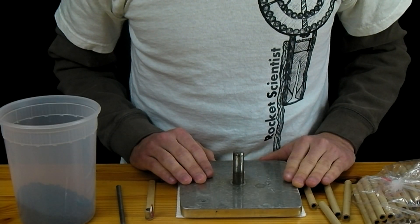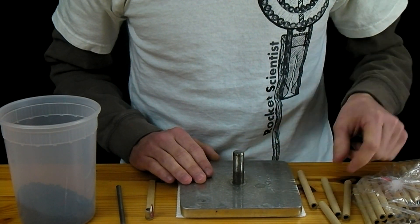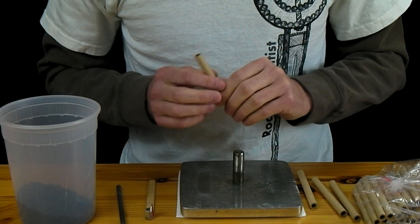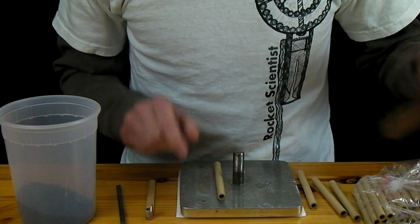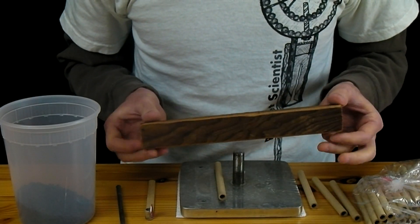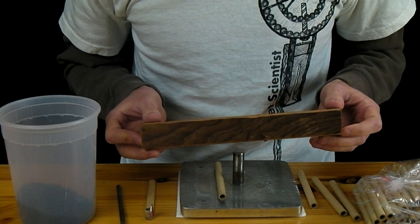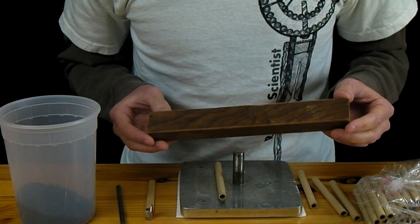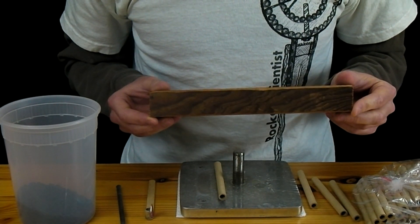Alright so our spolets are going to be made simply by ramming black powder into our tubes. Now what I'm going to use to ram these is just a small piece of wood. For ramming rockets or something you would use a large rawhide mallet but for something as small as spolets you don't want that kind of impact.